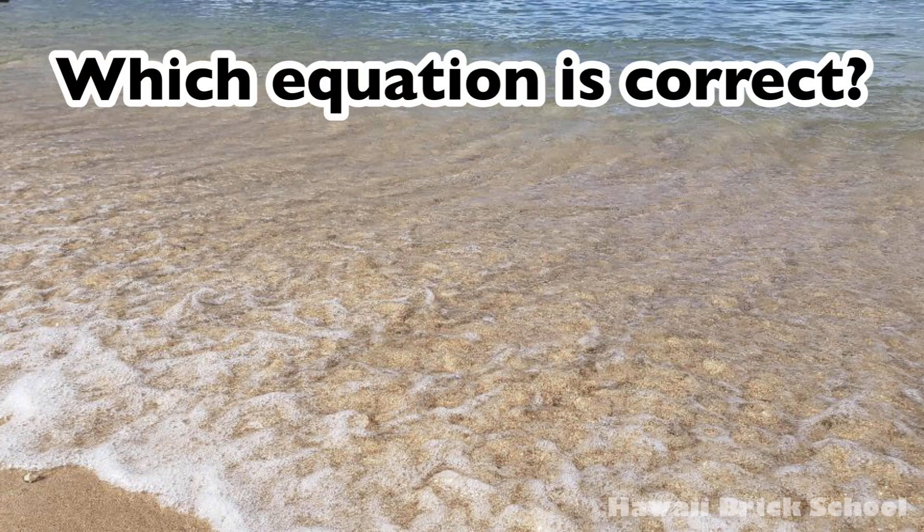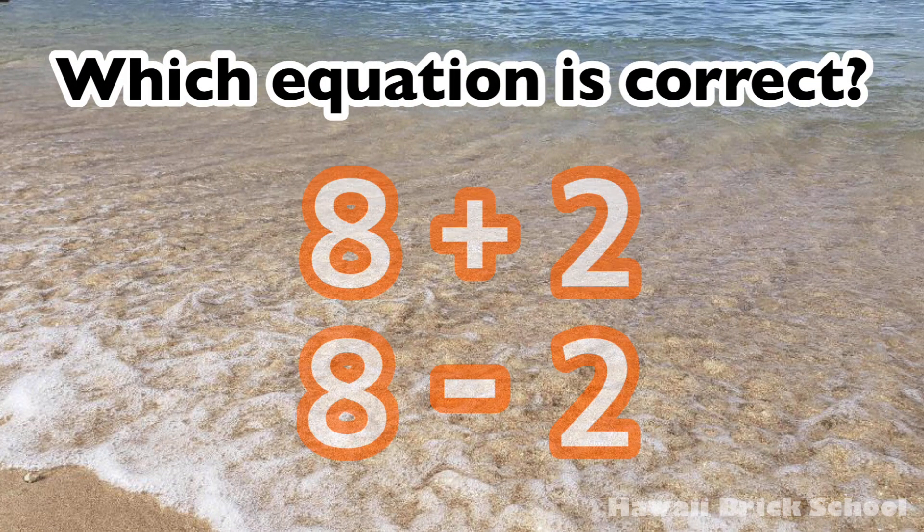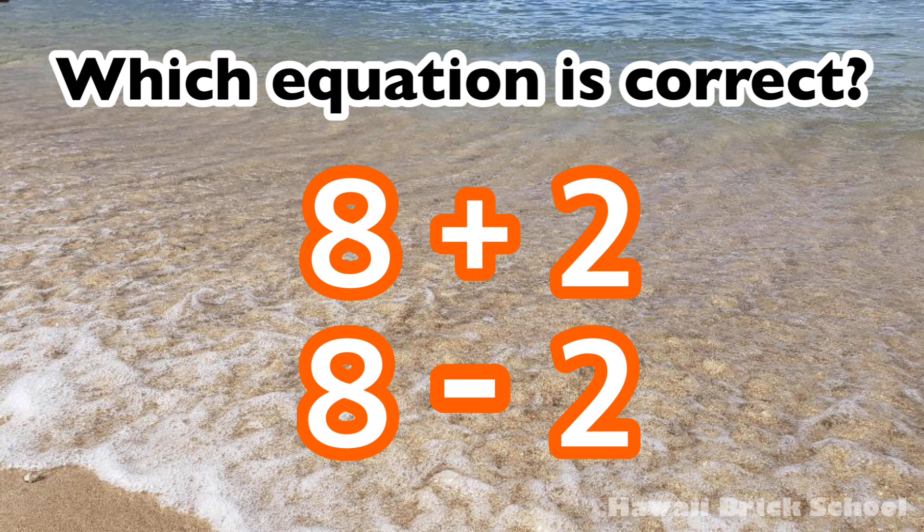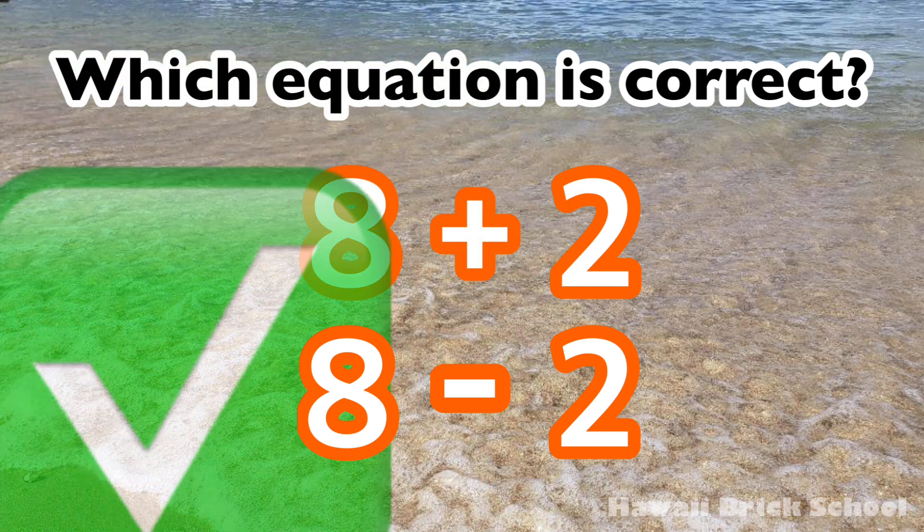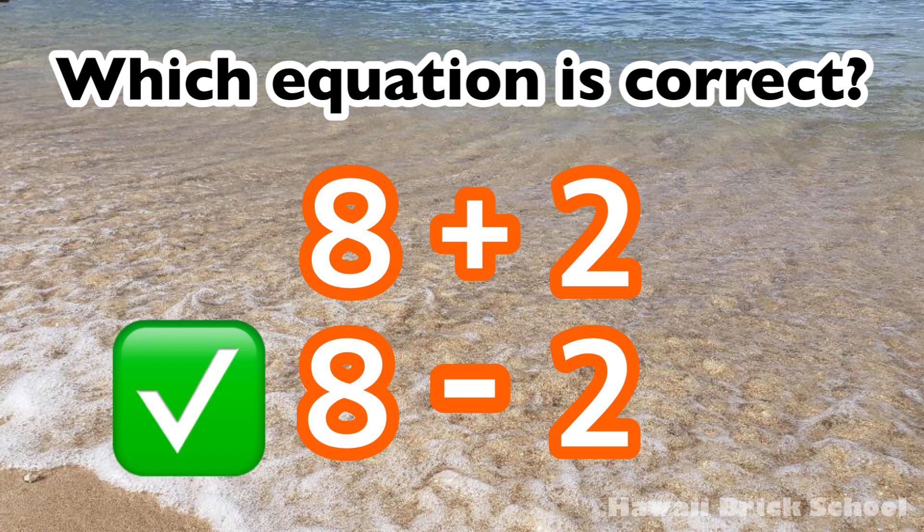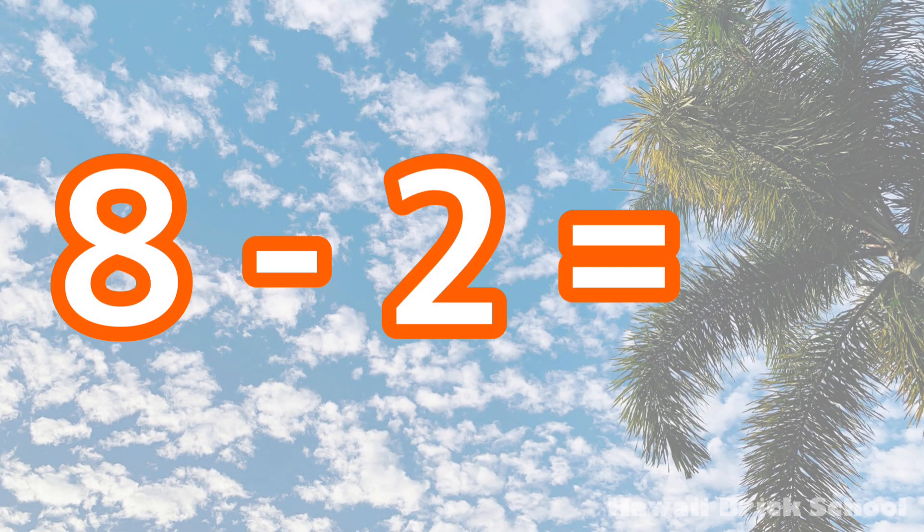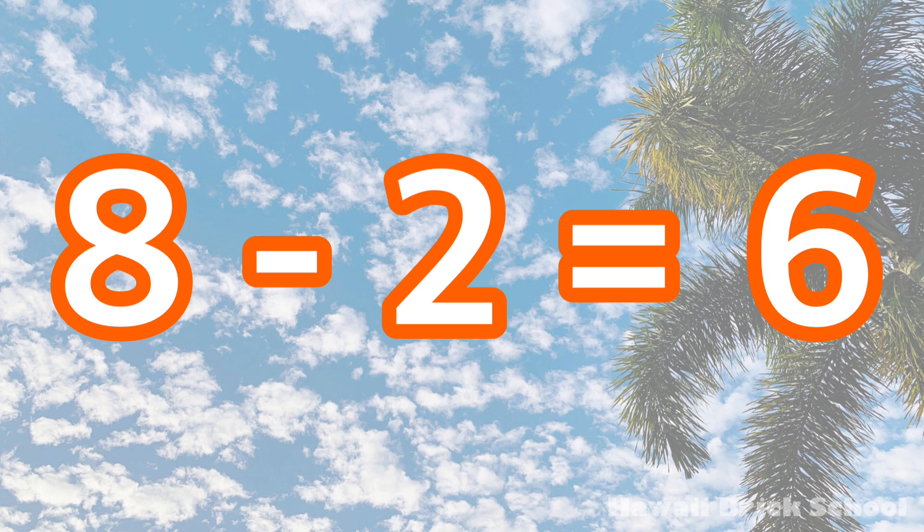Which equation is correct? 8 plus 2 or 8 minus 2? The correct equation is 8 minus 2. 8 minus 2 is 6.